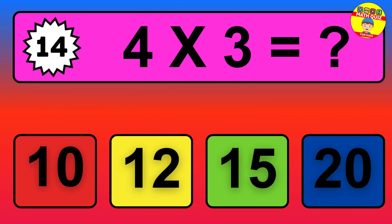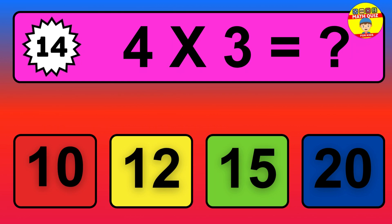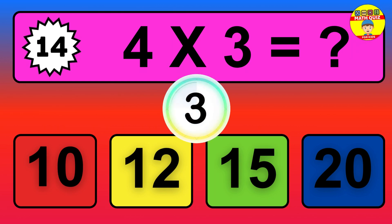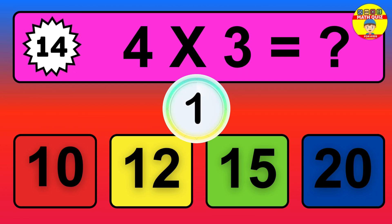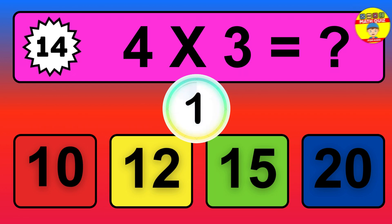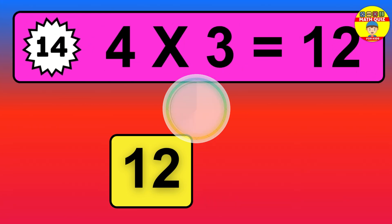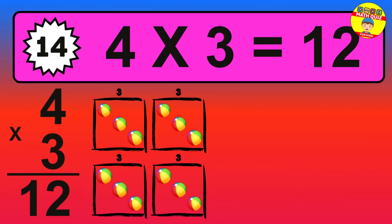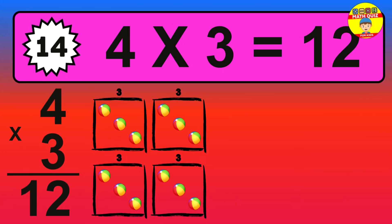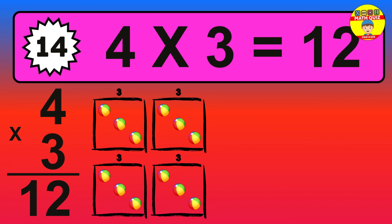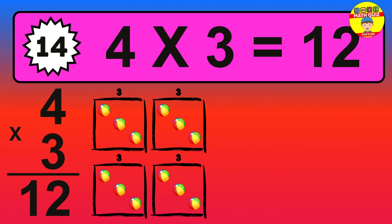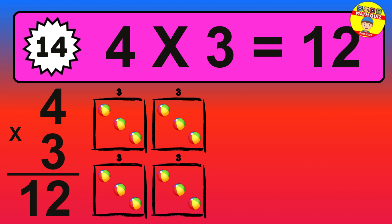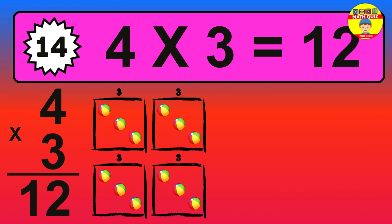Question fourteen: four times three equals what? The answer is four times three is twelve. To calculate, we have four groups with three balls each one. So how many balls do we have? Twelve balls.